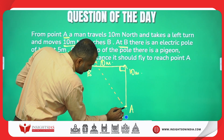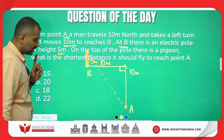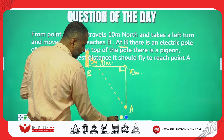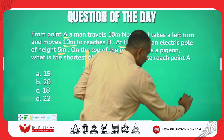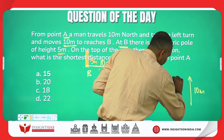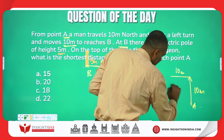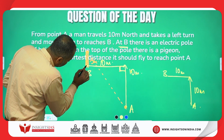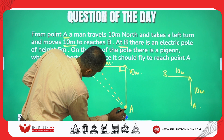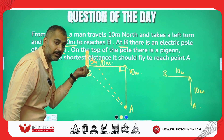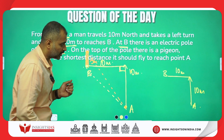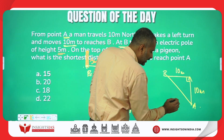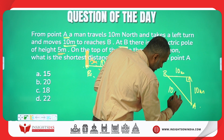If you travel 10 meters north and 10 meters left, this forms a 90-degree angle. I'm redrawing: this is 10 meters and this is 10 meters, point B is here. From point A to the bottom of the pole on the ground — since this is a 90-degree angle, we apply Pythagoras. When both sides are 10, Pythagoras gives us 10√2.